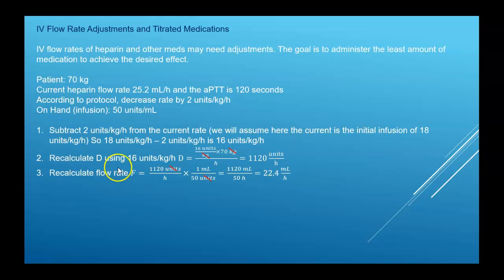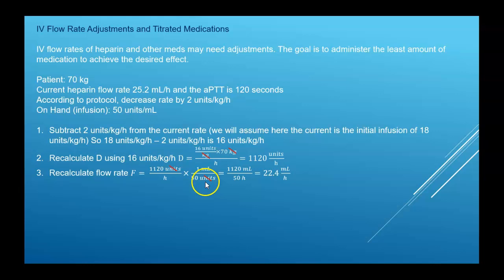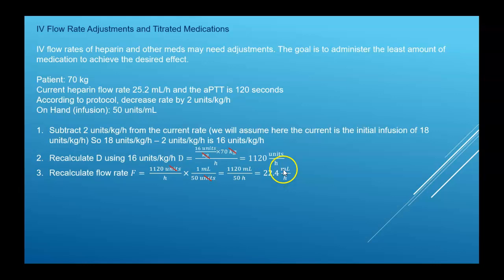Recalculate the D rate using 16 units per kilogram per hour times 70 kilograms, giving 1,120 units per hour. Then find the new flow rate: D rate of 1,120 units per hour times the on hand inverted — 500 milliliters over 25,000 units, written as milliliters per unit. Cancel units, multiply across, and divide — the new flow rate is 22.4 milliliters per hour, which is a decrease from the previous rate.